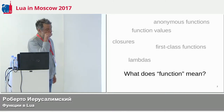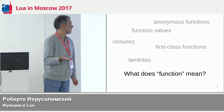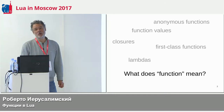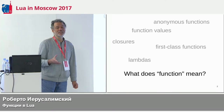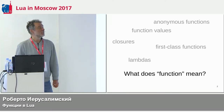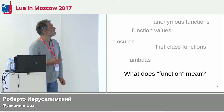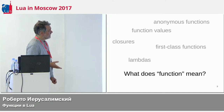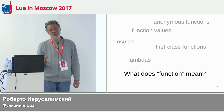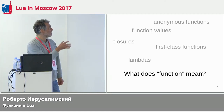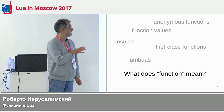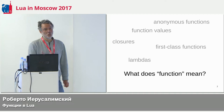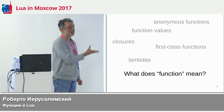First, we'd like to discuss what functions mean. There are a lot of different words that people use to describe what actually doesn't have a real proper name. People sometimes talk about anonymous functions, function values, first-class functions, closures, or lambdas. Each one actually means something a little different, and none of them means exactly what most people want to talk about when they refer to that kind of function.